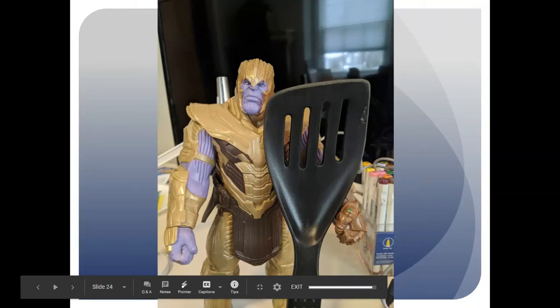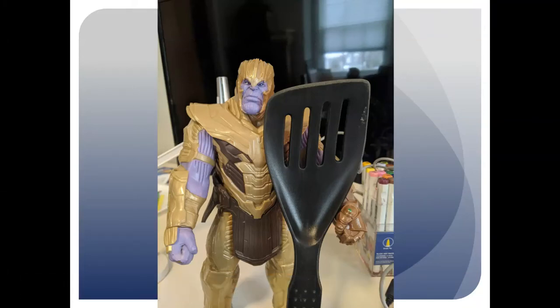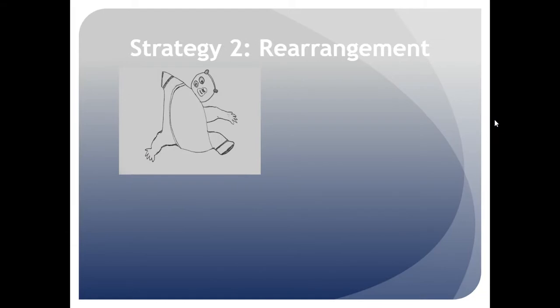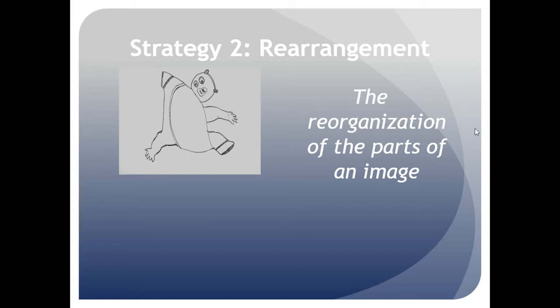Hi sixth grade. Last week we learned about the strategy to combine things — to put them together to make something new. Now we're going to learn about the strategy of rearrangement. Rearrangement is moving around the parts of a single object to create something new.